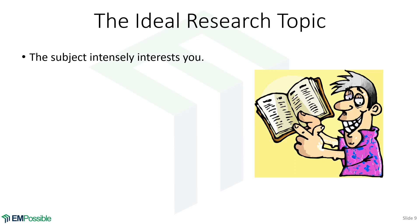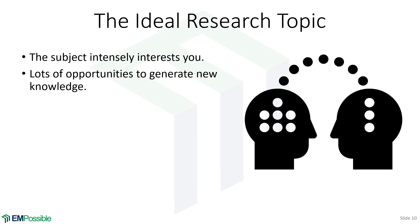I want to talk about what the ideal research topic may be. Maybe the ideal research topic does not exist for you — I'm going to list six or seven things here, and maybe you only hit five, and that's fine. The first sign is that the subject intensely interests you. Particularly if you're doing a PhD, you are about to invest a lot of time and energy into something, and you don't want to do that on something you hate. The next thing: you want your research topic to have lots of opportunities to generate new knowledge. That's what a PhD is all about — demonstrating to the world that you can generate new knowledge on your own.